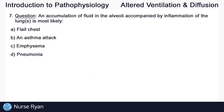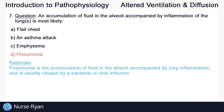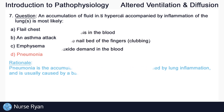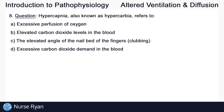Question number seven. An accumulation of fluid in the alveoli accompanied by inflammation of the lungs is most likely — the answer is D: pneumonia. Pneumonia is the accumulation of fluid in the alveoli accompanied by lung inflammation, and is usually caused by a bacterial or viral infection.